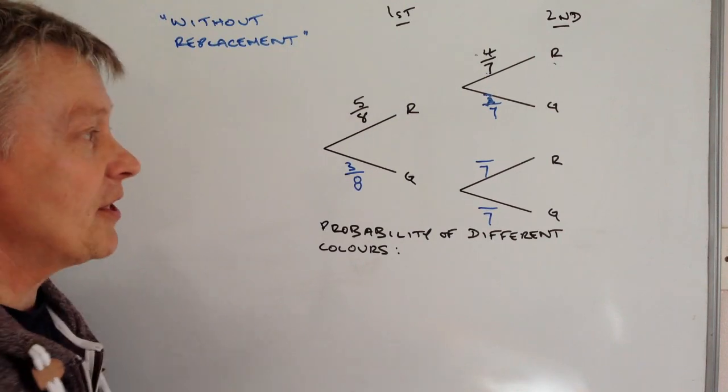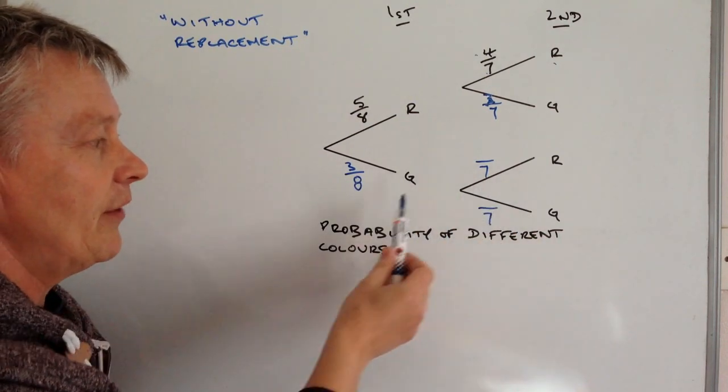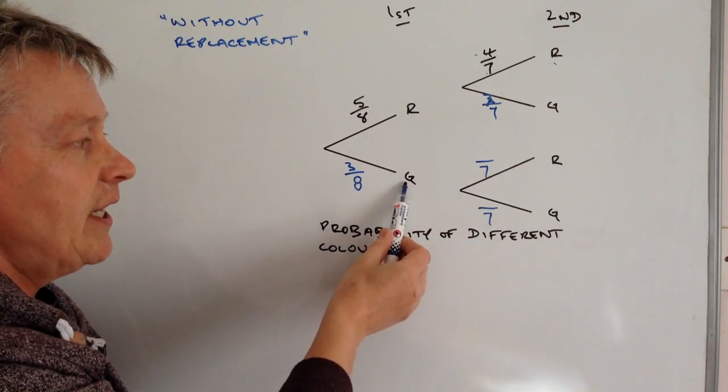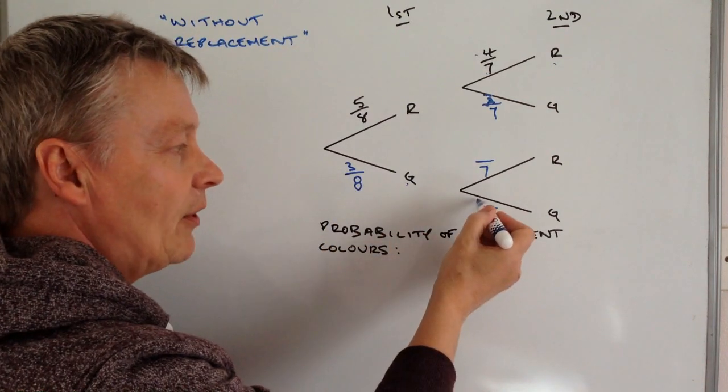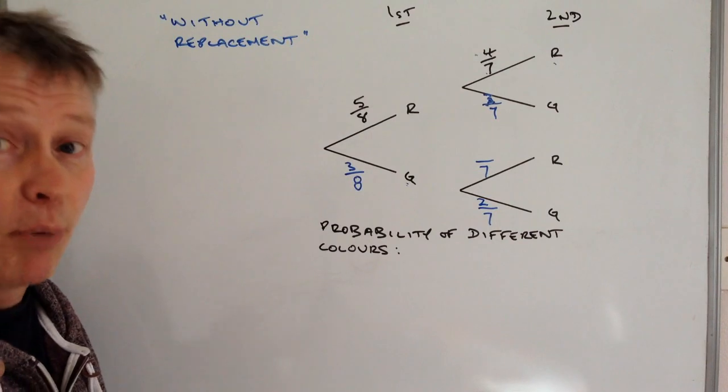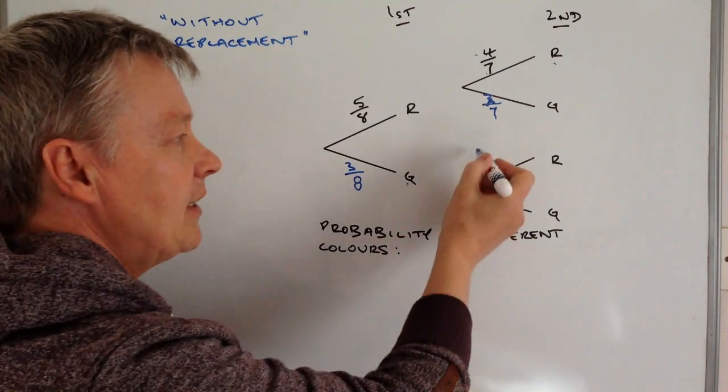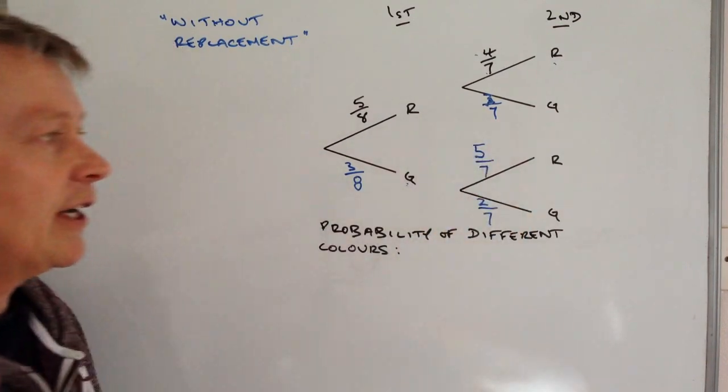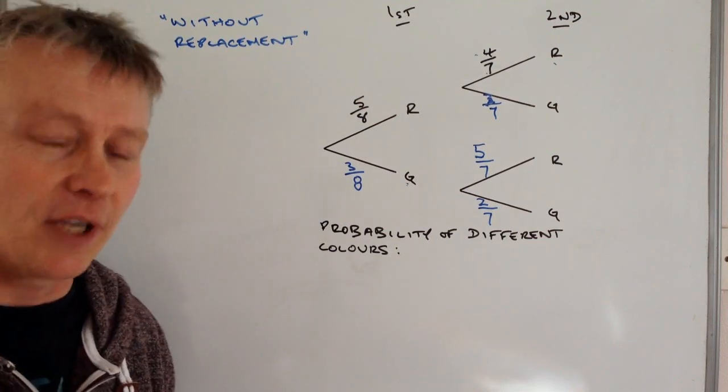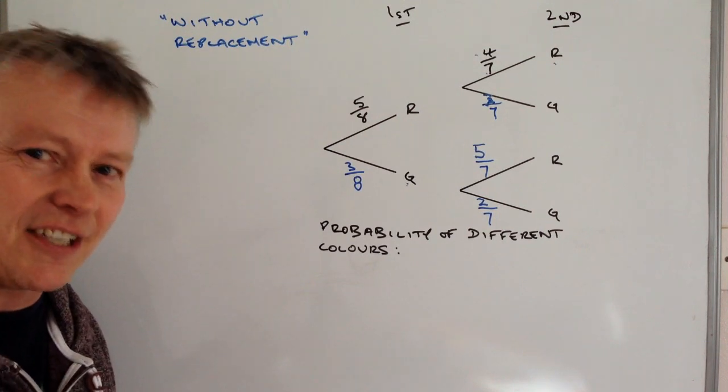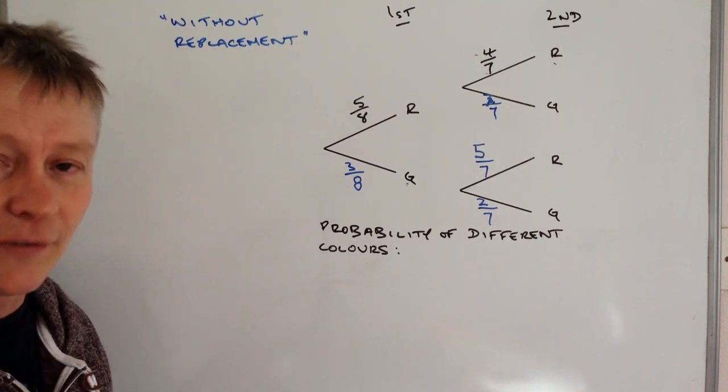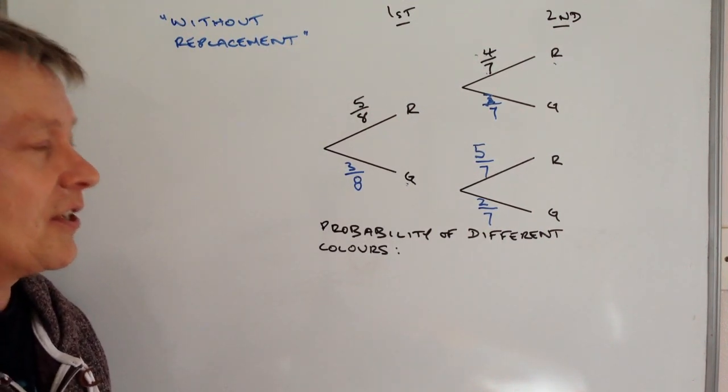Now we pretty much do the same for this bottom bit. He picked a green the first time round, well because there were three there's now only two, but the red marbles remained untouched so there's five red marbles in the bag. I hope that's okay for you, this is kind of a star type, so it's about level five, level six at GCSE.